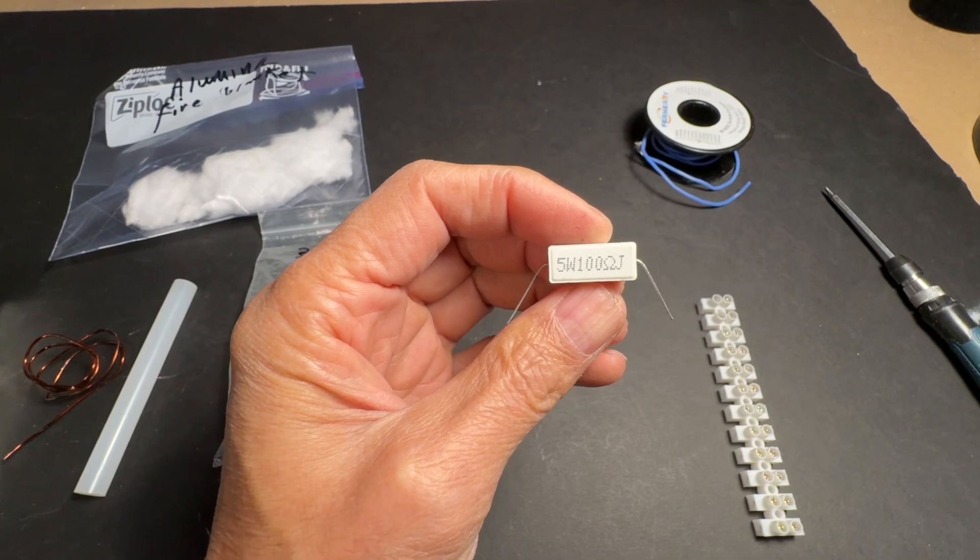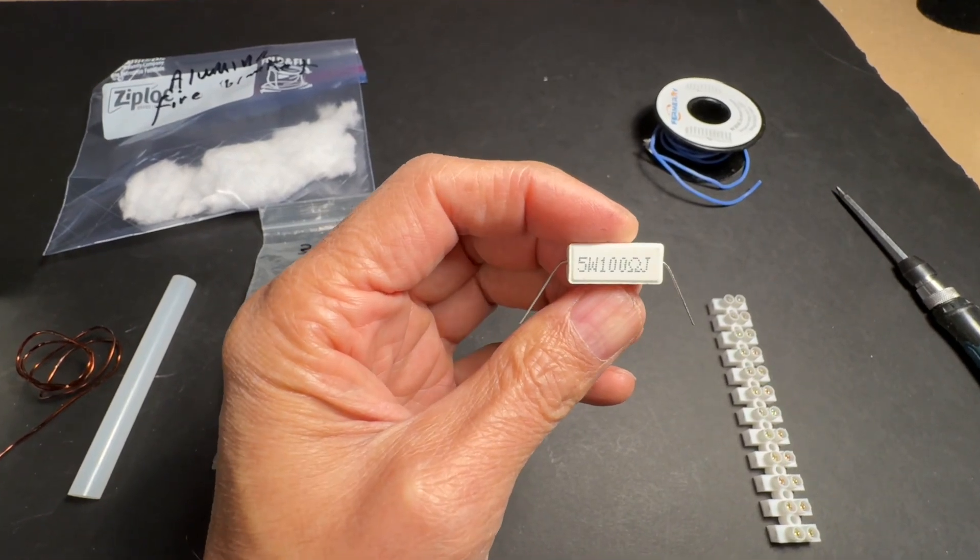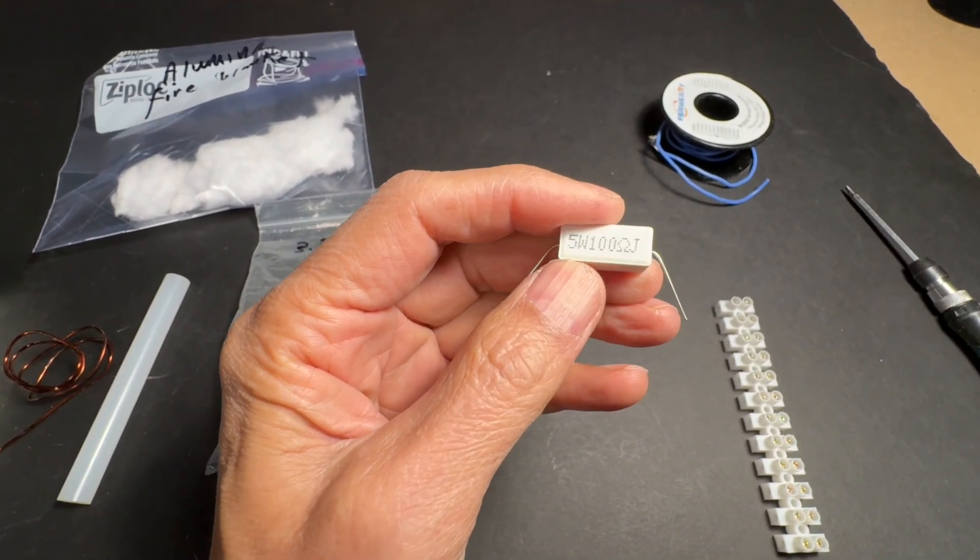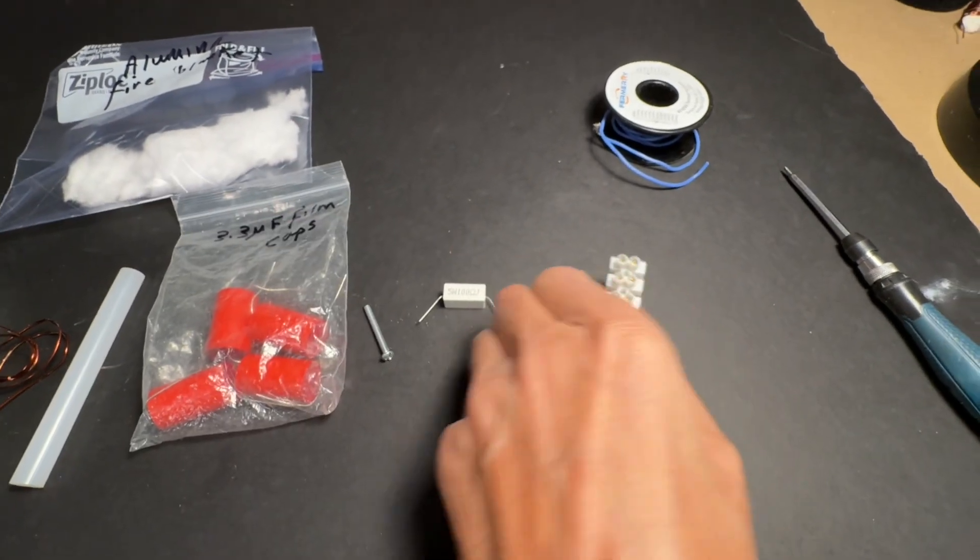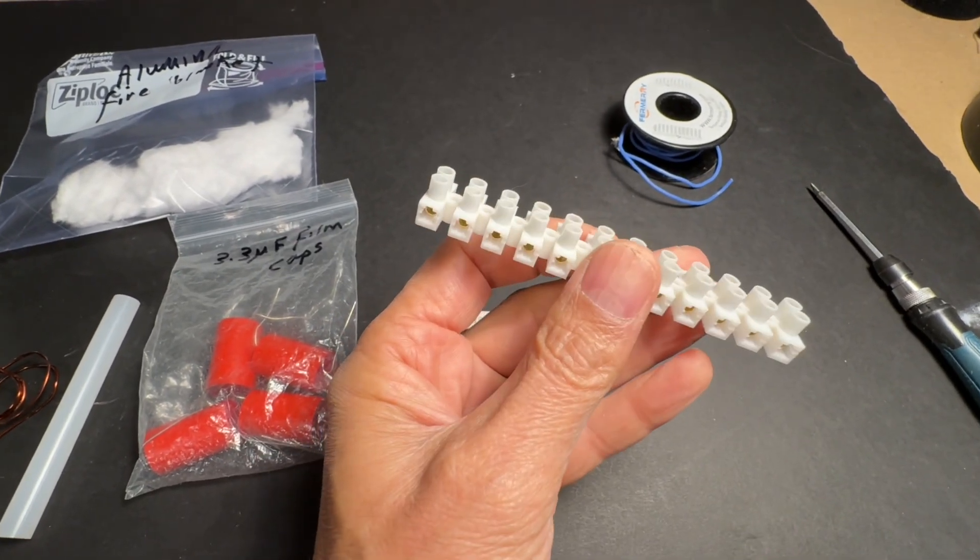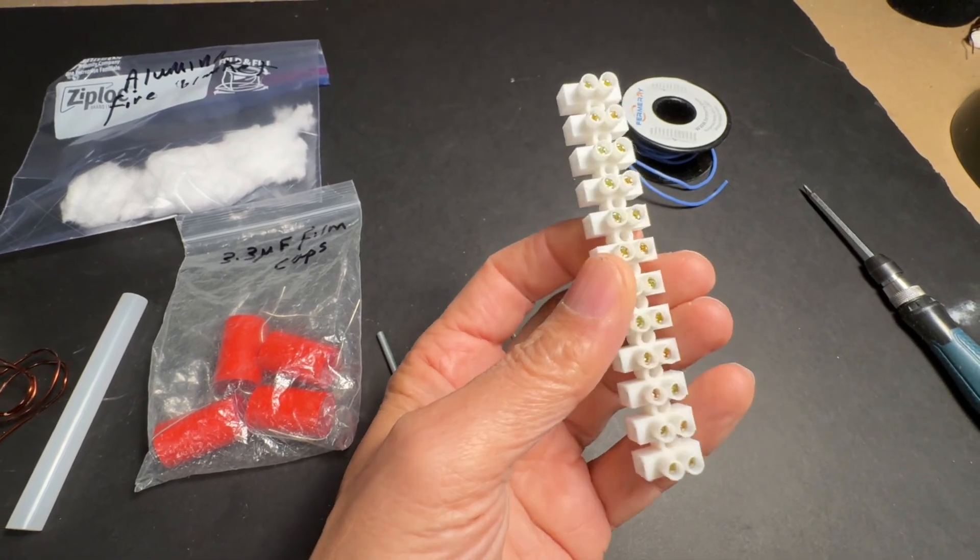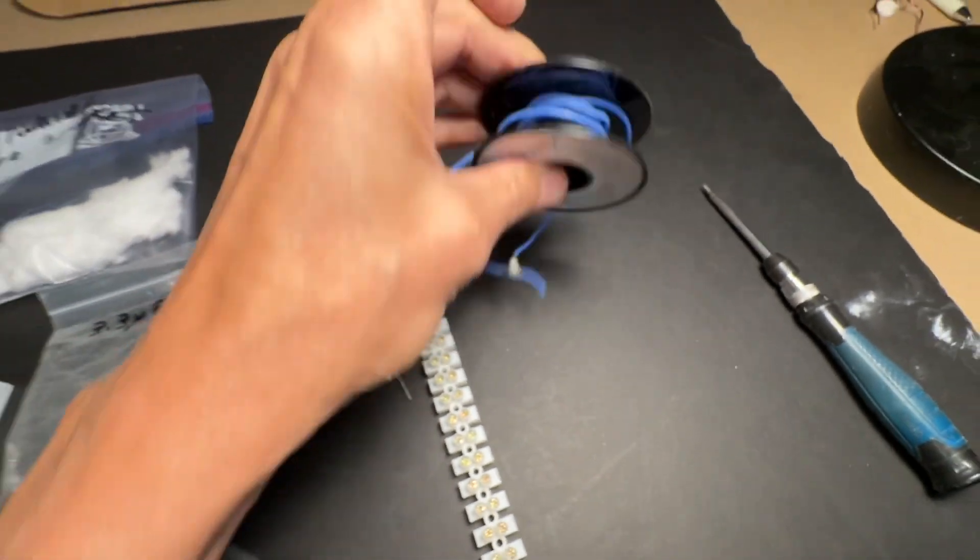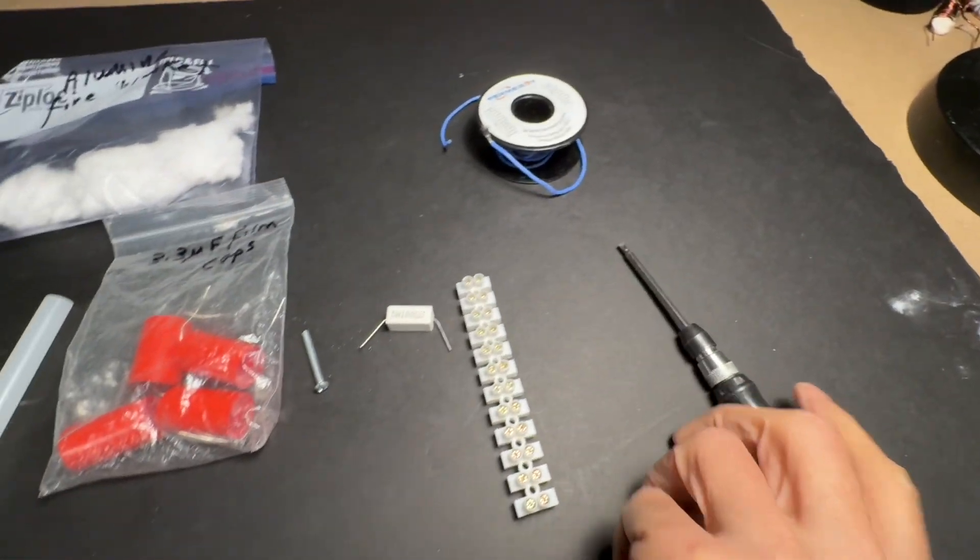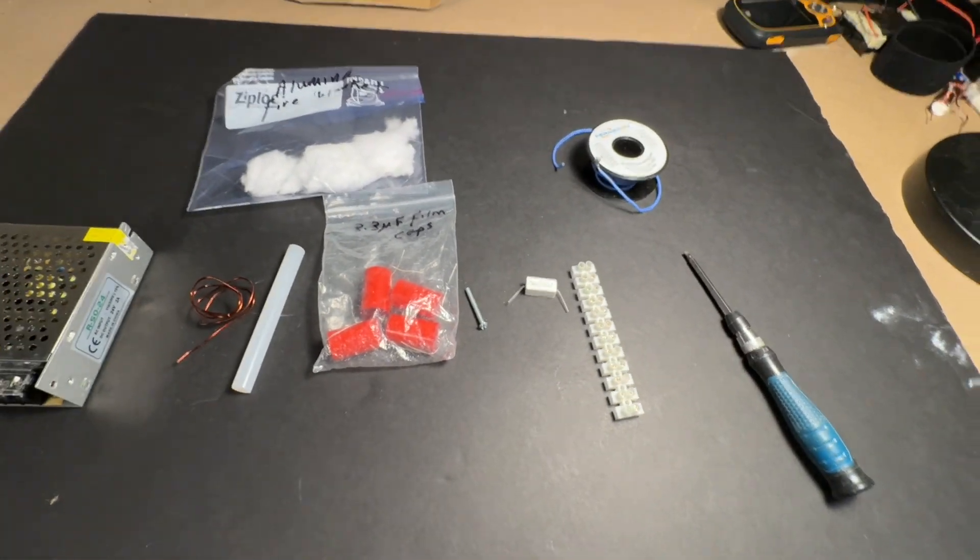You're going to need a 100 ohm resistor, this is a power resistor rated at 5 watts, I'm actually using a 10 watt resistor. A European style screw connector or terminal connector, these are available on Amazon, they're very handy, and then some hook up wire and then of course some tools. That's basically all you need to build this project.